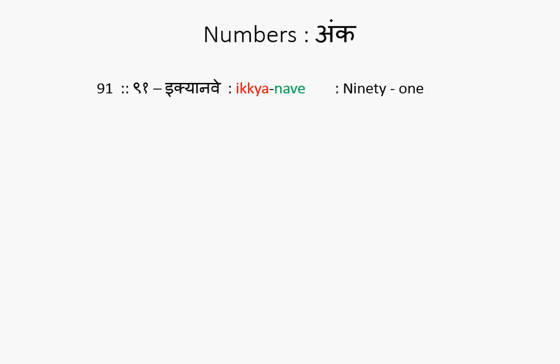90s. 91. Ek is 1, isn't it? Nabe is 90, right? So here, Ikyaanve. Nabe stands for the 90s — all the series in the 90s are going to have Nabe as the ending. Ikyaanve.